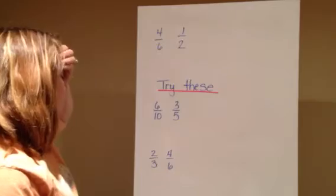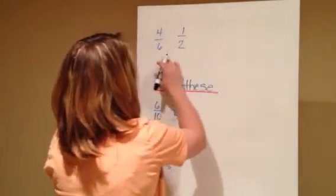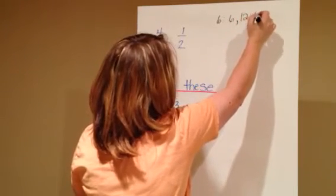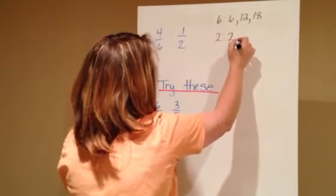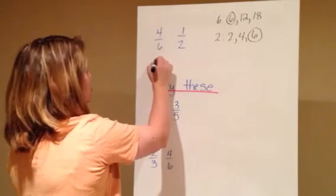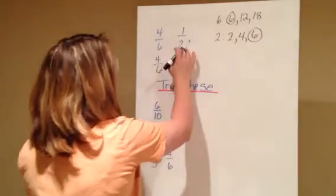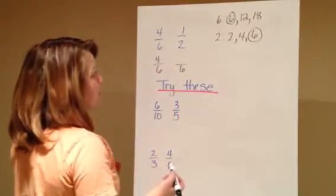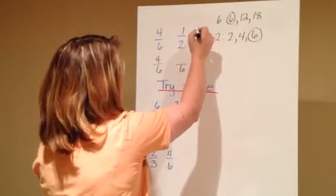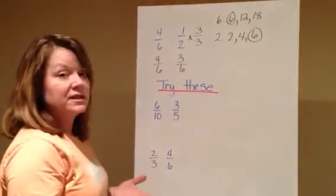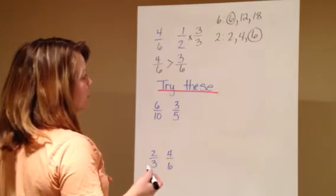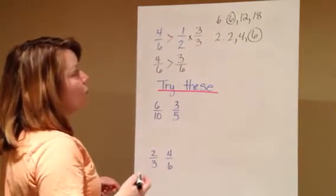Alright, I've got one more using equivalent fractions. When I look at these denominators, I have four-sixths and one-half. Six on this side gives me six; two times six is twelve; three times six is eighteen. Then for two: two, four, six — something in common: six! So I'm going to keep four-sixths the same because it already has a denominator of six. I need to change one-half to have a denominator of six, so I multiply times three over three. Now I'm looking at four-sixths compared to three-sixths. Four is larger than three, so four-sixths is greater than three-sixths, or four-sixths is greater than one-half.